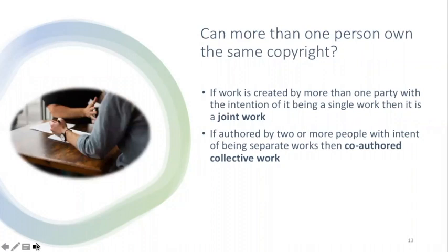You may be asking yourself, who actually owns copyright in a work created by multiple people — for example, what if two people got together to write an article? Copyright can be owned by more than one person. If three people write a song's lyrics together with the intention of it being a single work, all three individuals own copyright in the joint work, and joint work authors each have all the rights afforded to the work. If multiple people contribute to a work but with the intent of their contributions being separate and independent, the work is considered a co-authored collective work. Encyclopedias and photography anthologies are good examples, where individual contributors retain copyright of their individual contributions but not to the work as a whole.